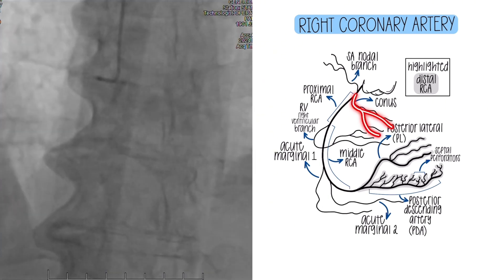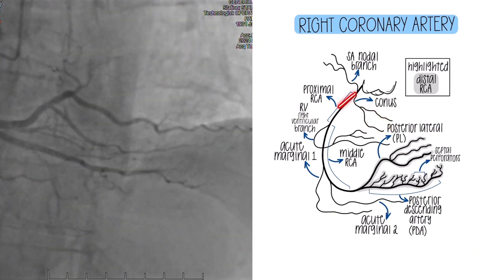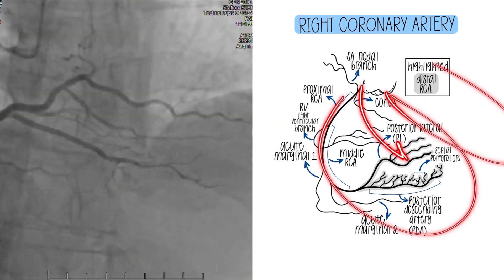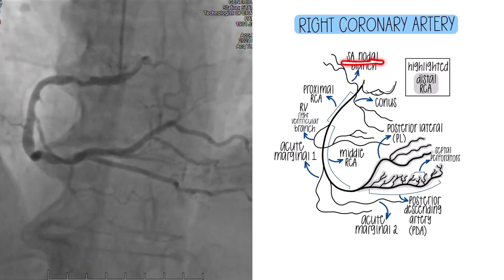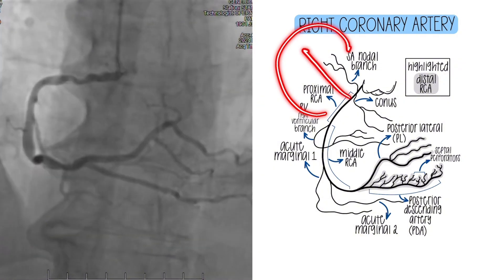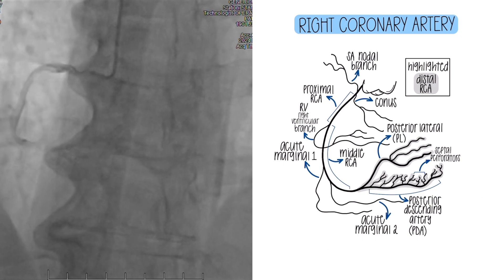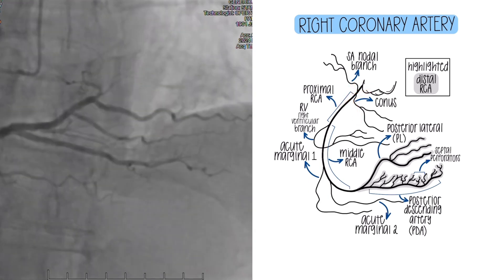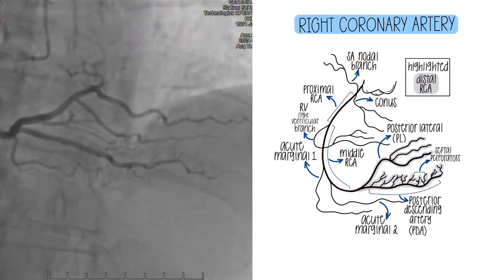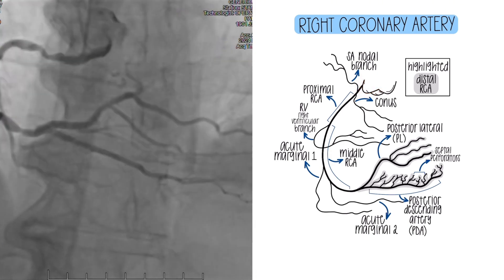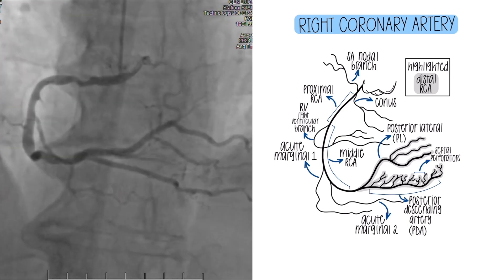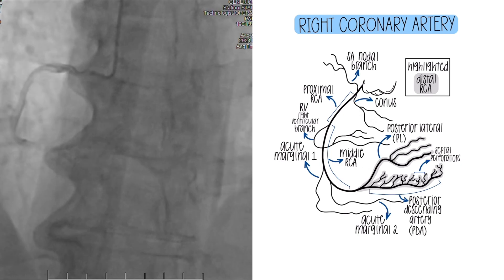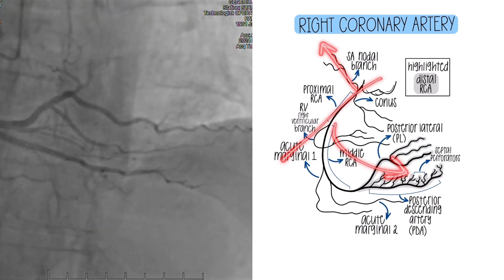The conus feeds the right ventricular outflow tract, so it goes in that direction. The SA nodal branch feeds the SA node, which is in the right atrium, so it goes the opposite way. Instead of labeling based on what branches off first, label based on directionality — because some people have a conus with a separate ostium, meaning it doesn't come off the RCA at all. It might have its own ostium off the aortic root or off the right cusp. So really, if a branch is going toward the right ventricular outflow tract, it's the conus. If it's going the opposite direction, it's the SA nodal branch.